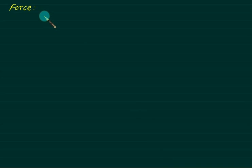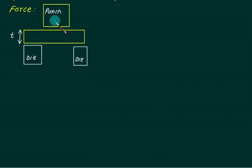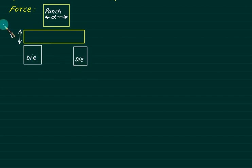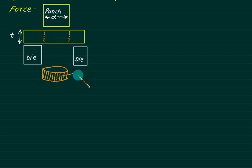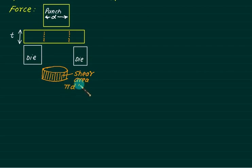Discussing force requirements in sheet metal work. We have a punch of diameter d and a plate of thickness t supported on a die. When the punch penetrates, the final part is blanked out, creating a shear area equal to π × d × t.